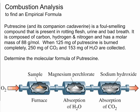The question talks about a compound called putrescine, a foul-smelling compound. It says it's present in rotting flesh, urine, and bad breath. We're told that this compound is made of three elements: carbon, hydrogen, and nitrogen, and we're also given its molar mass. We're going to need that later. The molar mass is 88 grams per mole.